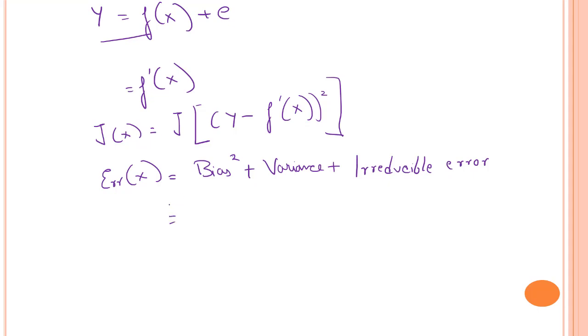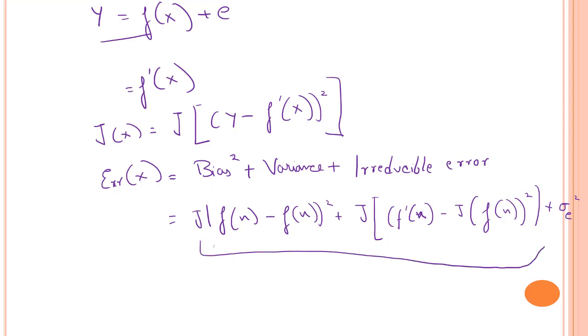If we just open it out, it should be looking somewhat like this: we have (f(x) - f hat(x))^2, then the variance term, and the error rate, that is irreducible error. This is what gives me the actual value of my error rate. Irreducible error is the error that cannot be reduced by creating a good model.